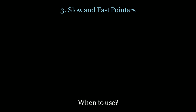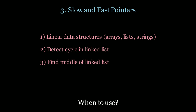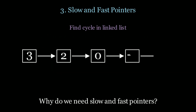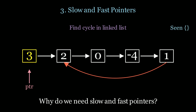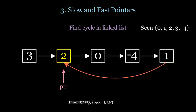Next up we have slow and fast pointers. Use this if you have linear data structures, if you want to detect a cycle in a linked list, find the middle of a linked list, and perform all of this in one pass with O(1) space. The traditional way to find a cycle uses a hash set — for every node you iterate through, you add it to the hash set; if you've seen it before, you've found the cycle. However, the time and space complexity are both O(n).